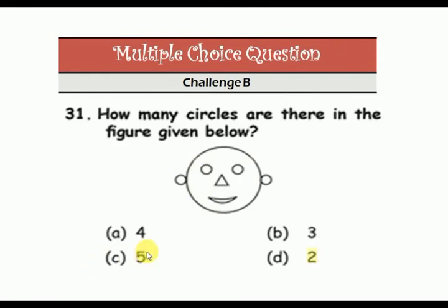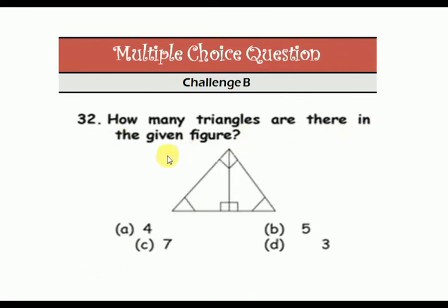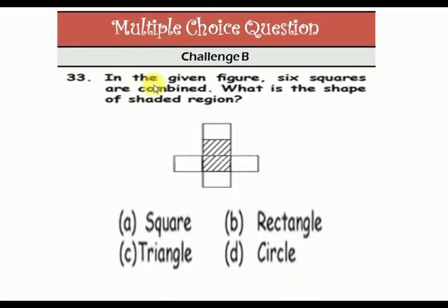How many triangles are there in the given figure? One, two, three, four, five, six, and seven. Next question: six squares are combined — what is the shape of the shaded region?